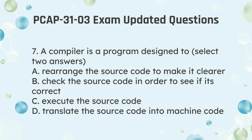Question 7: A compiler is a program designed to — select two answers. a. Rearrange the source code to make it clearer. b. Check the source code in order to see if it's correct. c. Execute the source code. d. Translate the source code into machine code.